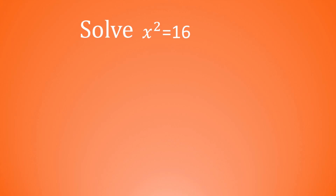Solve x squared is equal to 16. This is actually very simple — all we need to do is take the square root of 16. But there's one thing to look out for: x is equal to the square root of 16, which is 4, but we also have a negative square root of 16. So x could also be equal to negative 4, because negative 4 times negative 4 also gives us 16. So you've got two solutions there.